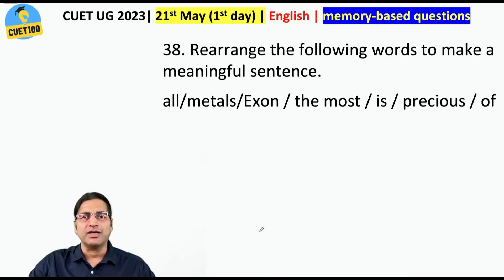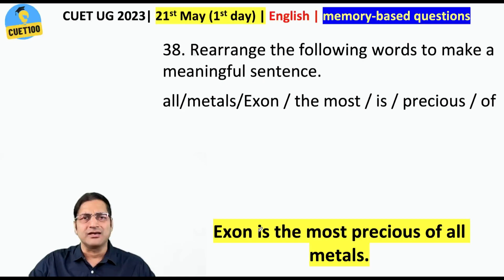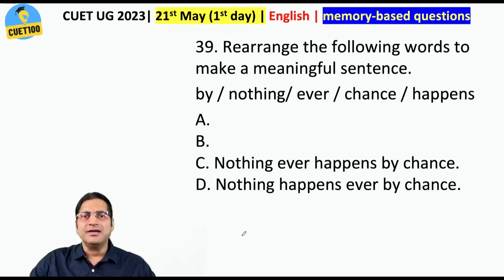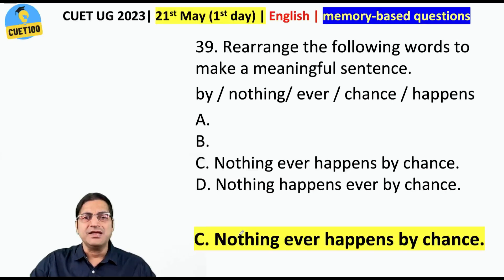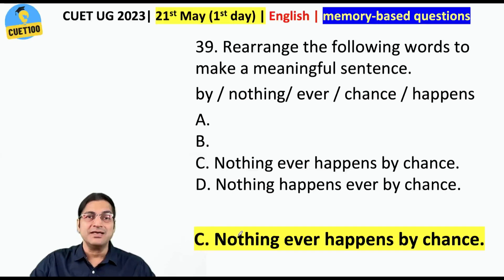Rearrange the following words to make a meaningful sentence — this is not difficult. 'Exxon is the most precious of all metals' — is there any metal called exxon? Anyway, that's just the question. Next rearrangement: the answer is 'nothing ever happens by chance.' Many people marked 'nothing happens ever by chance,' but 'ever' should come before 'happens.'